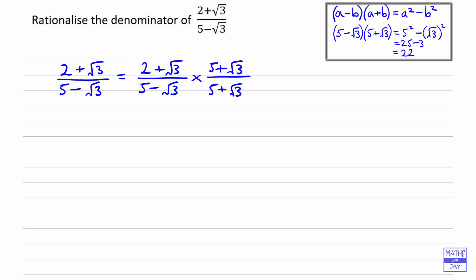So let's multiply out the 2 plus root 3 and the 5 plus root 3. So that's 2 times 5 are 10, root 3 times root 3 is 3, and we've got 2 root 3 and 5 root 3. So that's the numerator to start with.